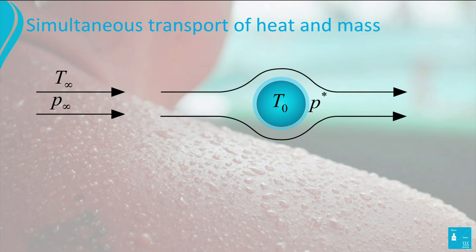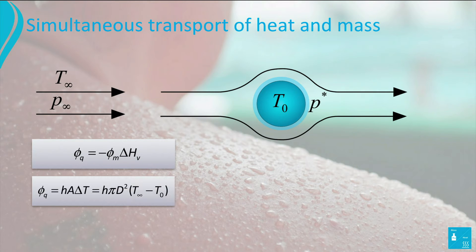We have now expressions for the simultaneous transport of heat and mass from the water droplet in the airflow: one for the heat flow, an expression for the heat transfer between the air and the water droplet, and one for the mass transfer from the droplet surface to the air.